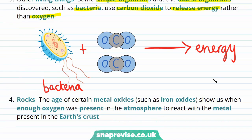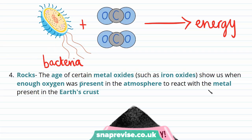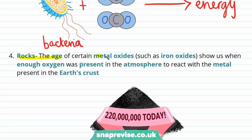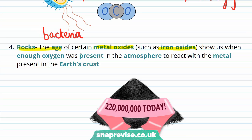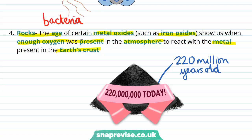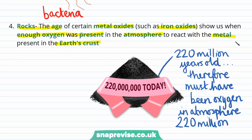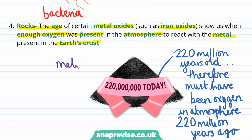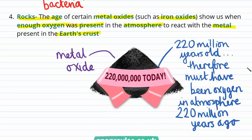Finally, we can predict when oxygen appeared in the atmosphere by looking at the ages of rocks — specifically metal oxides such as iron oxides. Each of these rocks indicates when there was enough oxygen in the atmosphere to react with the metal present in the Earth's crust to form these oxides. For example, if we find a metal oxide that is 220 million years old, we know there must have been oxygen in the atmosphere 220 million years ago, allowing us to build a much more complete picture of what gases were present at which point and how their concentrations have changed over time.